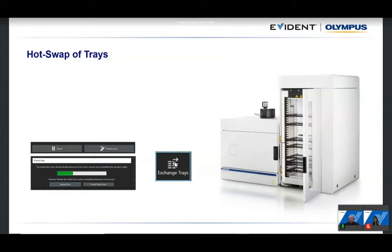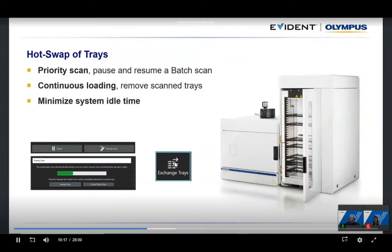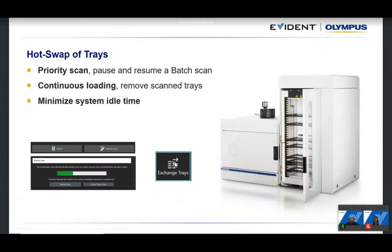In a laboratory you never know what samples are coming. If you have a large batch scan of 200 slides running and someone needs urgent scans, the VS200 has an exchange tray button activating a priority scan function — you can stop the batch, scan the priority slides, then restart the batch without problems. Continuous loading is also supported: trays already scanned can be removed and fresh ones inserted while the system keeps running, minimizing idle time and maximizing efficiency.